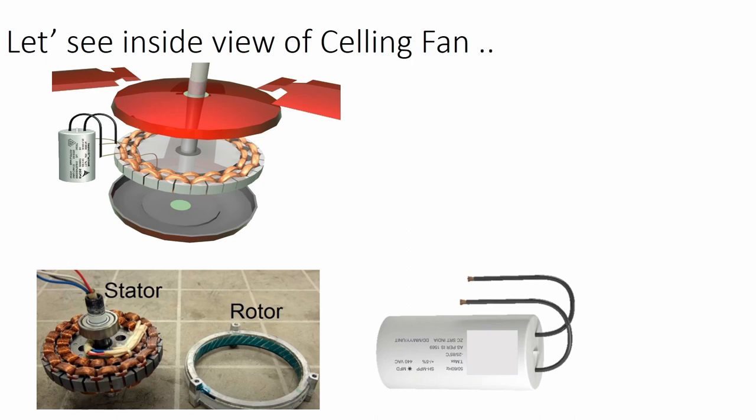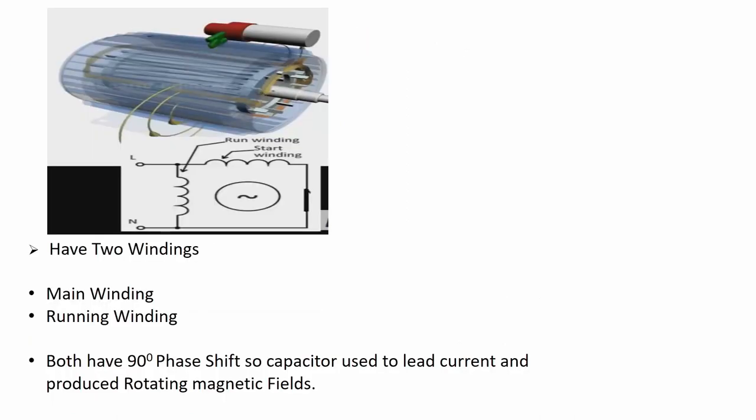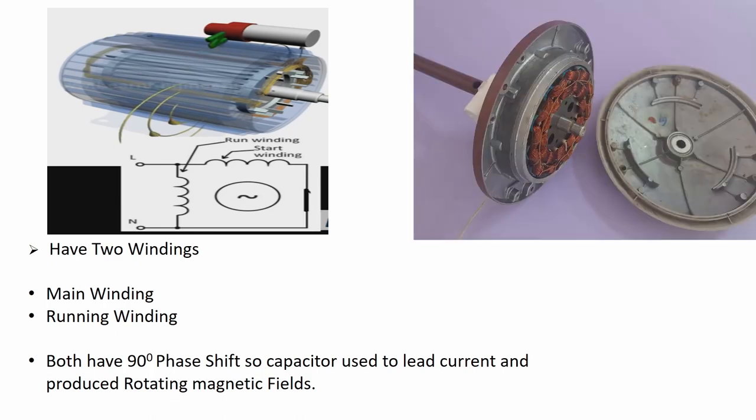There are two windings, so what is the use of capacitor? We know that we give the ceiling fan alternating current, that is a fluctuating current. One winding we call main winding and the other winding we call running winding. The two windings are arranged at 90 degrees phase shift. Both windings are connected in series.